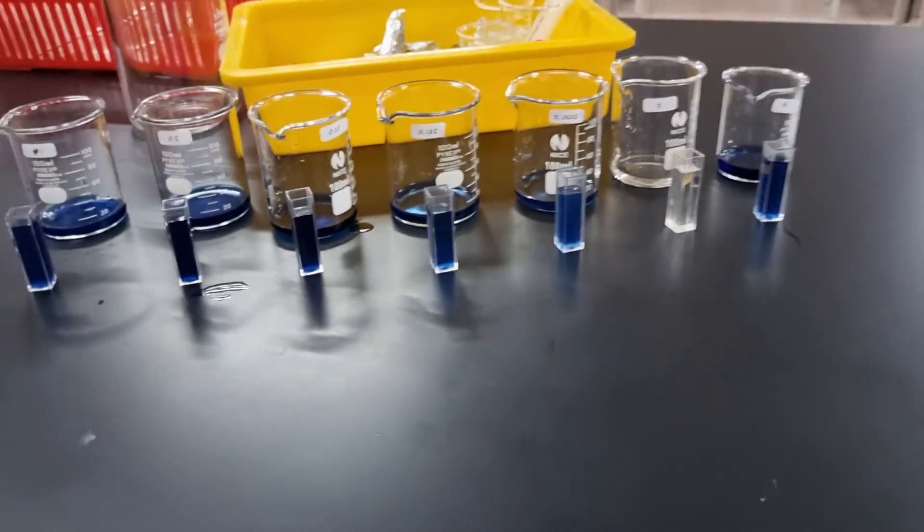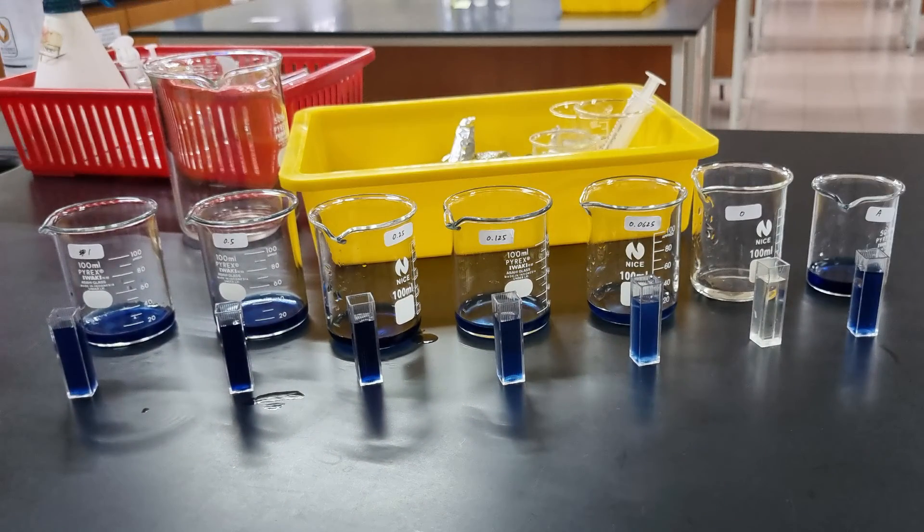We can see here that 1% would have a darker appearance, and 0.0625% would have the least color intensity, so a lighter blue in comparison. Of course distilled water and iodine is just yellow color because it has no starch in it. With this, we can actually record our qualitative test results.